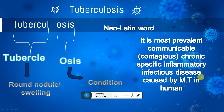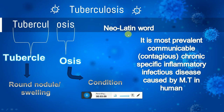Tuberculosis is defined as the most prevalent communicable, chronic, specific inflammatory infectious disease caused by Mycobacterium tuberculosis in humans. In humans, Mycobacterium tuberculosis is responsible for the tuberculosis disease. In animals, another species — Mycobacterium bovis — is responsible for producing tuberculosis disease.